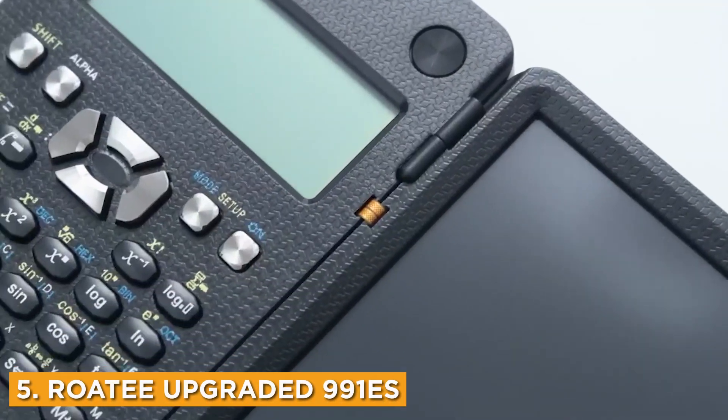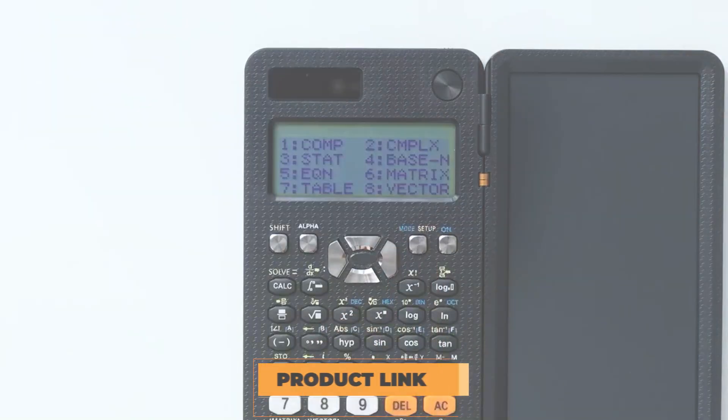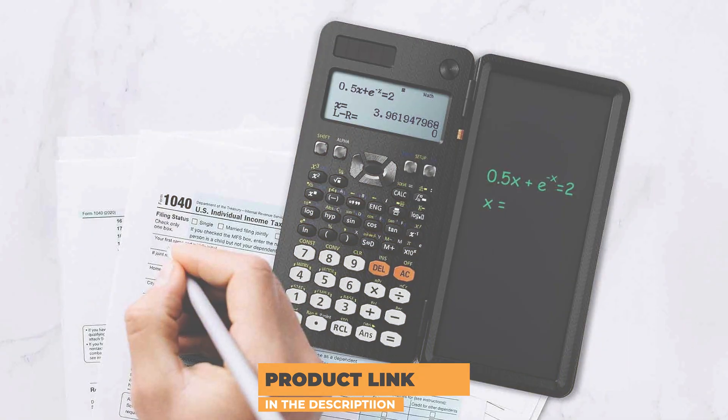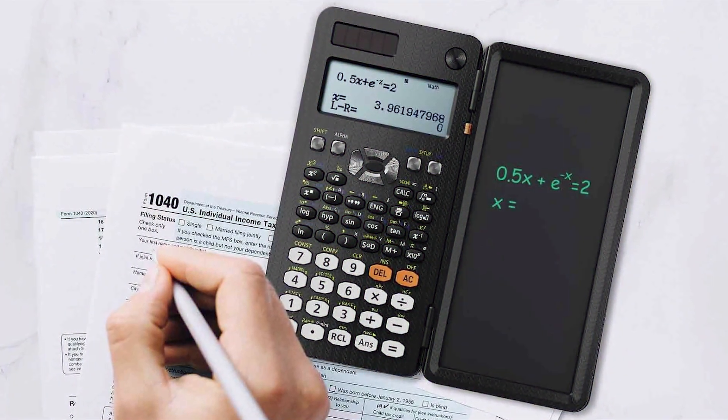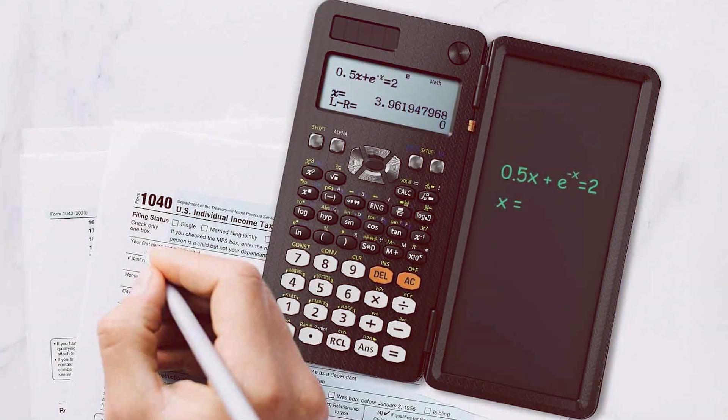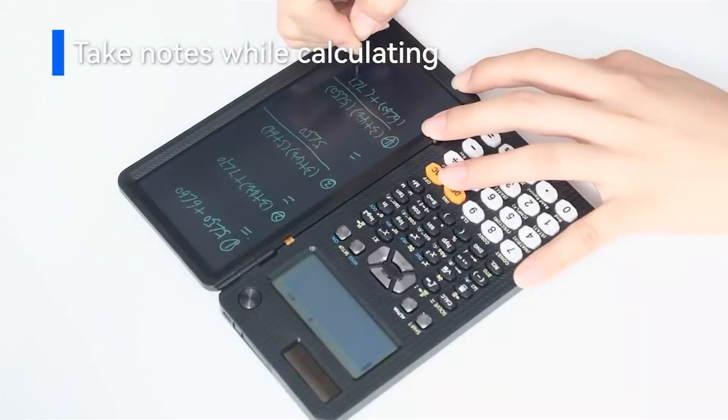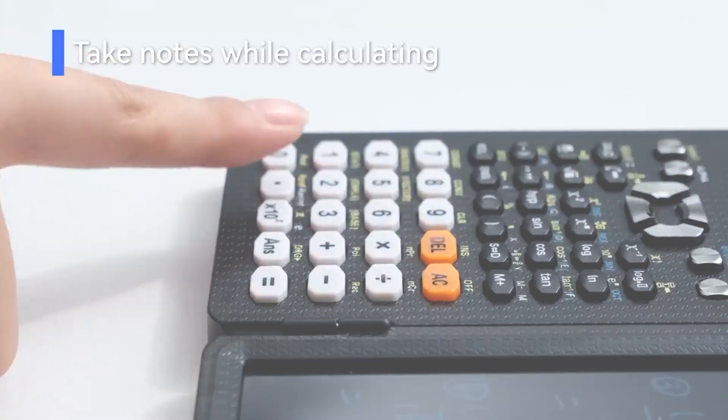Number five: ROATE Upgraded 991ES Plus Scientific Calculator with Notepad, a versatile tool designed for both students and professionals. The calculator features a sleek design, complemented by a large, high-contrast display that enhances visibility during calculations. This thoughtful design makes it an excellent choice for those who often find themselves working in low-light conditions.